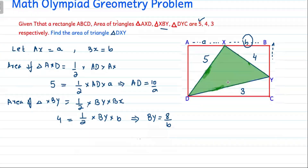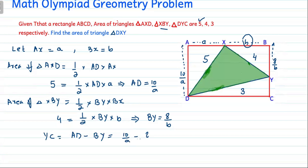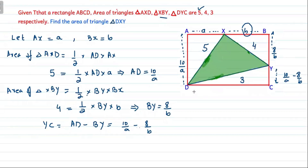The length BY is 8/B and the length AD is 10/A. We can now write YC in terms of A and B. Since AD = 10/A and BY = 8/B, the length YC equals AD minus BY, which is 10/A − 8/B. The length DC equals A plus B.